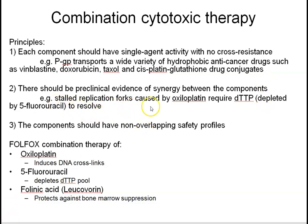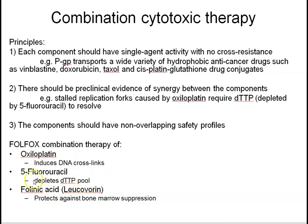An example of synergy is stalling replication forks with oxaliplatin, which requires a pool of nucleotides for repair. If 5-fluorouracil is also given to deplete dTTP, those two agents together have a clear rationale. Finally, agents used in combination should not have overlapping safety profiles — for instance, combining two agents that both deplete bone marrow would not be sensible. FOLFOX — a well-known, reasonably well-tolerated combination of oxaliplatin and 5-fluorouracil — exemplifies synergy, with folinic acid included to protect against bone marrow suppression.